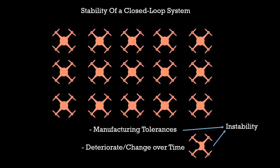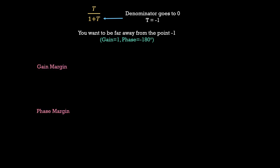Luckily, we have a way to quantify stability. Let us look at our closed loop transfer function T upon 1 plus T. We know that the system will blow up when the denominator goes to 0 or T is equal to minus 1. So, it is good to be far away from the point where gain is equal to 1 and phase is equal to minus 180 degrees. Hence, we define two terms, gain margin and phase margin. Gain margin is how far the loop gain is from 0 dB when phase is minus 180 degrees. Similarly, phase margin is how far away T is from minus 180 degrees when gain is 0 dB.